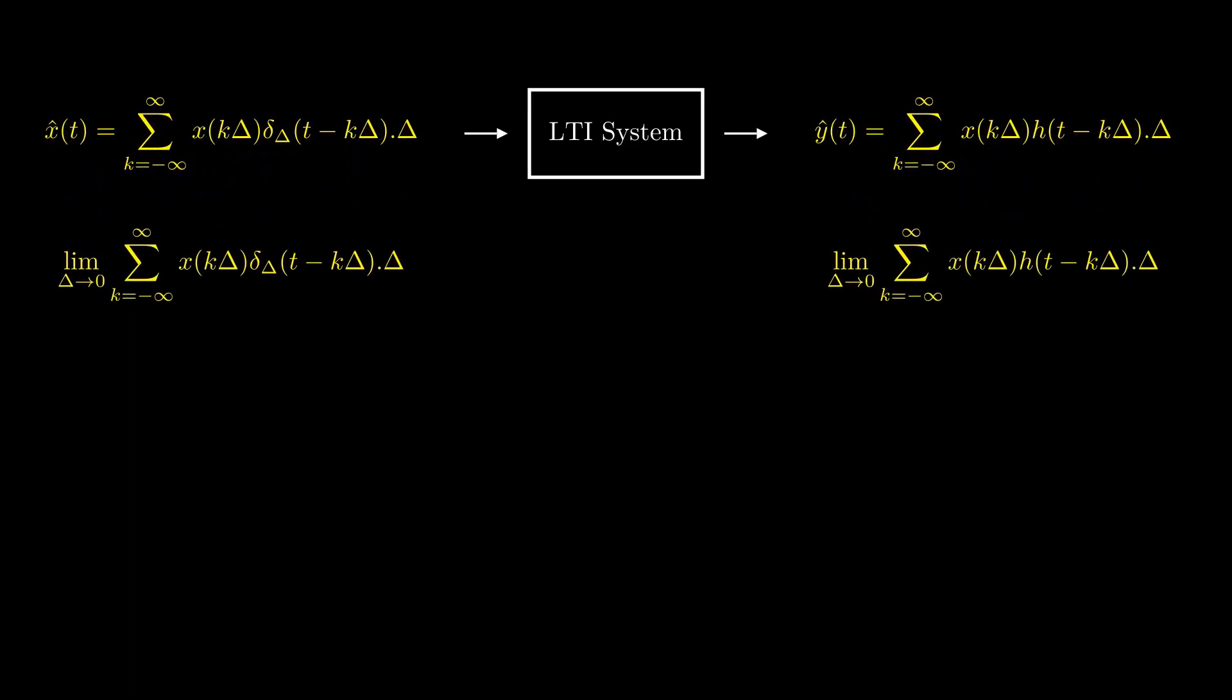Taking the limit of both sides as delta approaches zero, the summation becomes integration. Substituting k delta by tau and delta by d tau, we get what's called the convolution integral. Mathematically, convolution is denoted by an asterisk. This equation shows that when an input signal x(t) is passed through an LTI system with impulse response h(t), the output of the system y(t) can be calculated by convolving the input signal and the impulse response of the system.